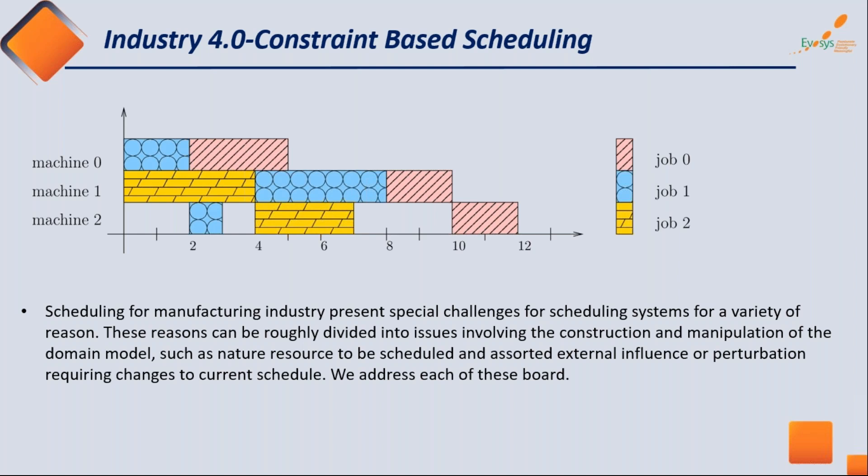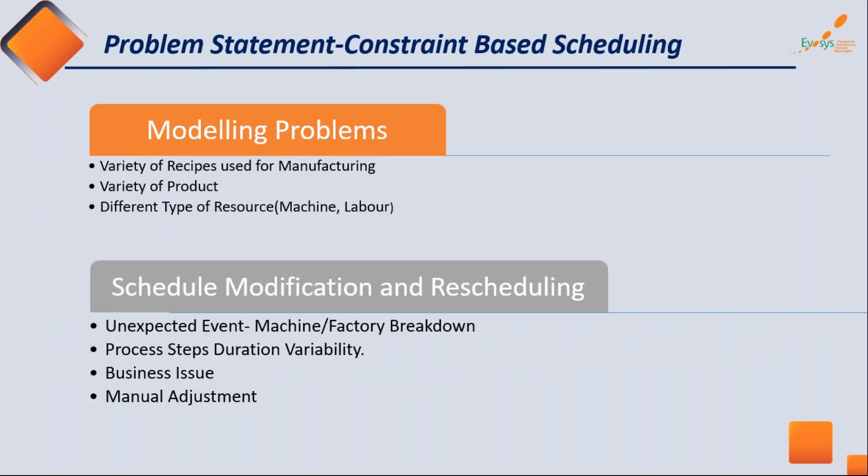If you ask a human scheduler — or even an Excel system — to schedule the jobs, there are limitations in deciding which job to start where, which machine should operate on which job at what particular time, and what are the different constraints. From this simple example, we have defined different problem statements.